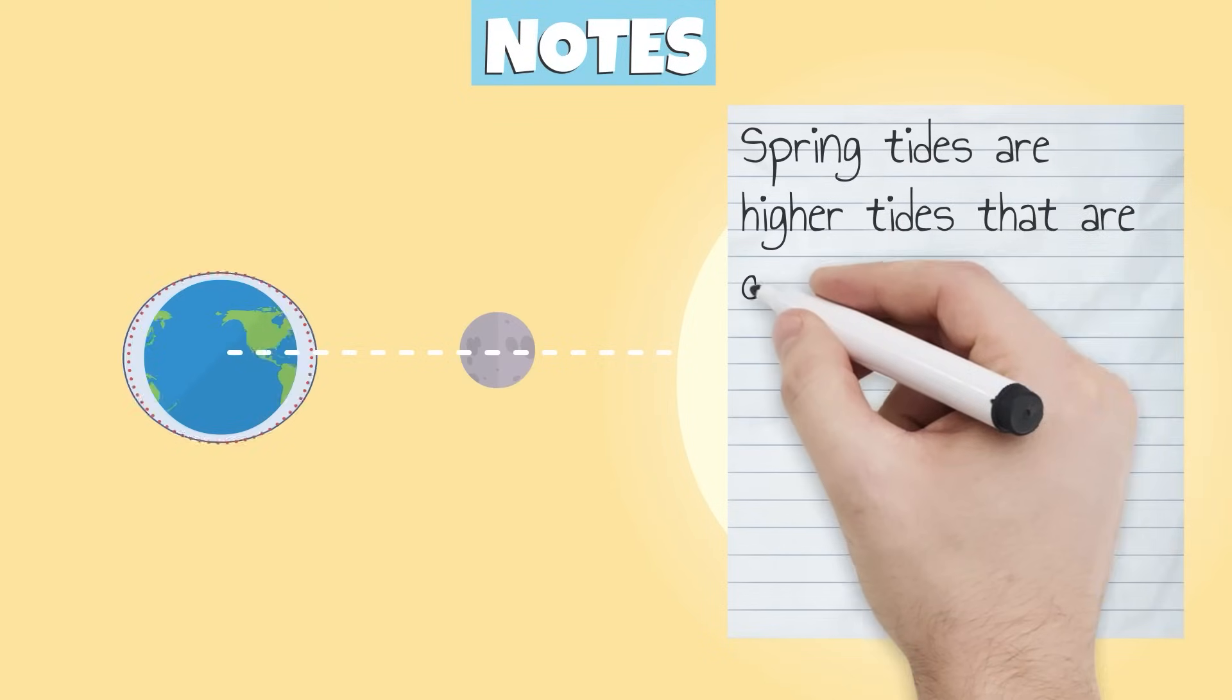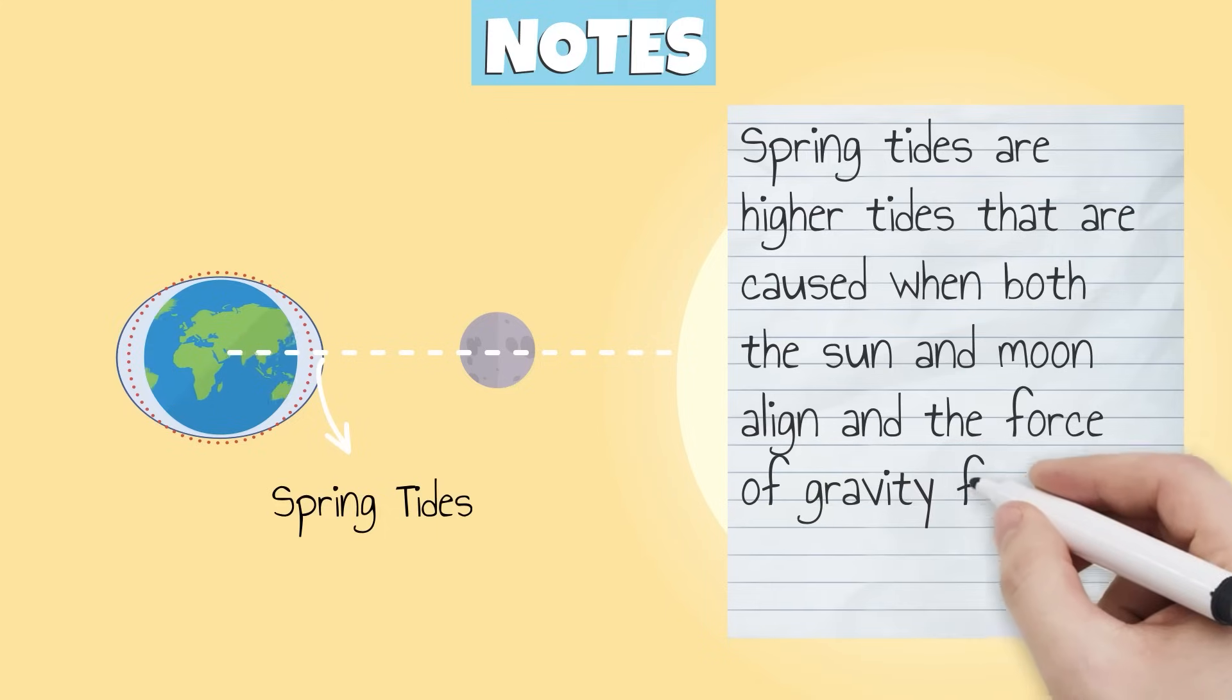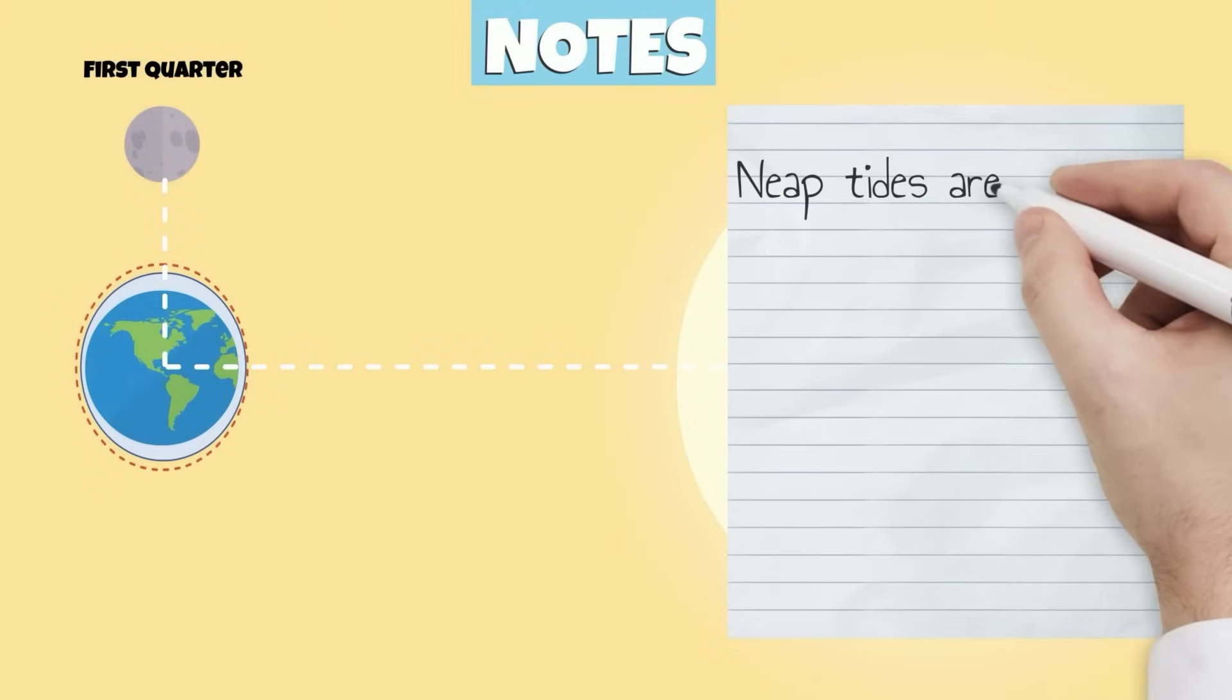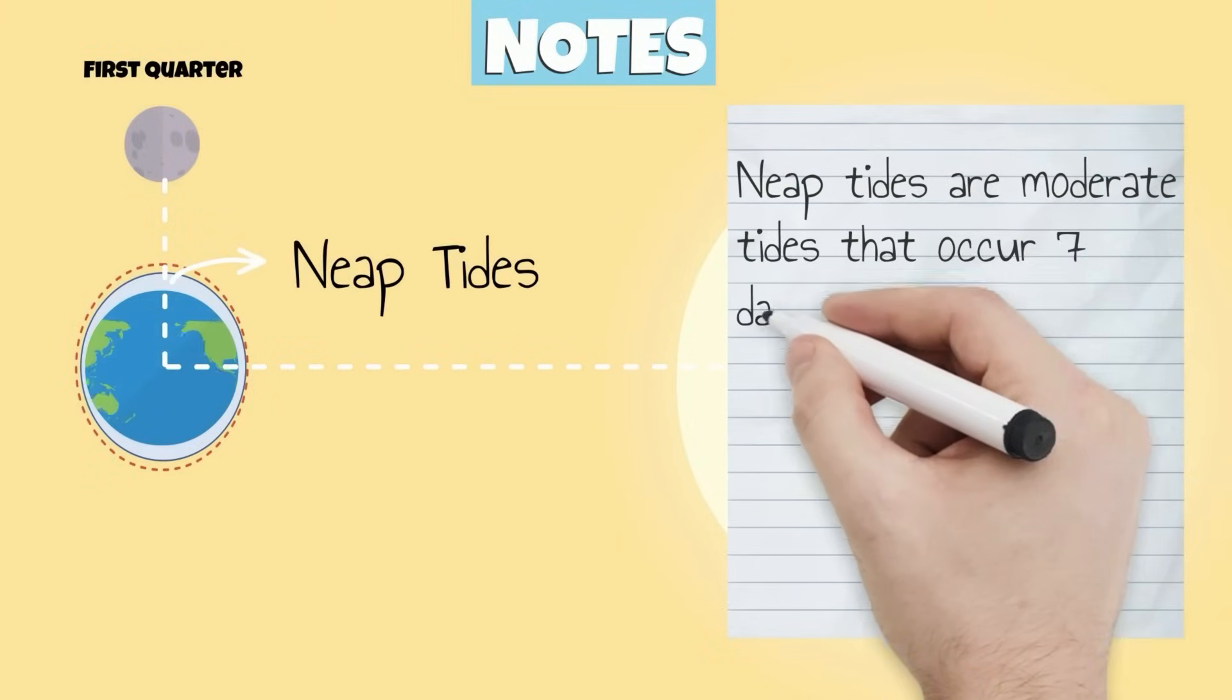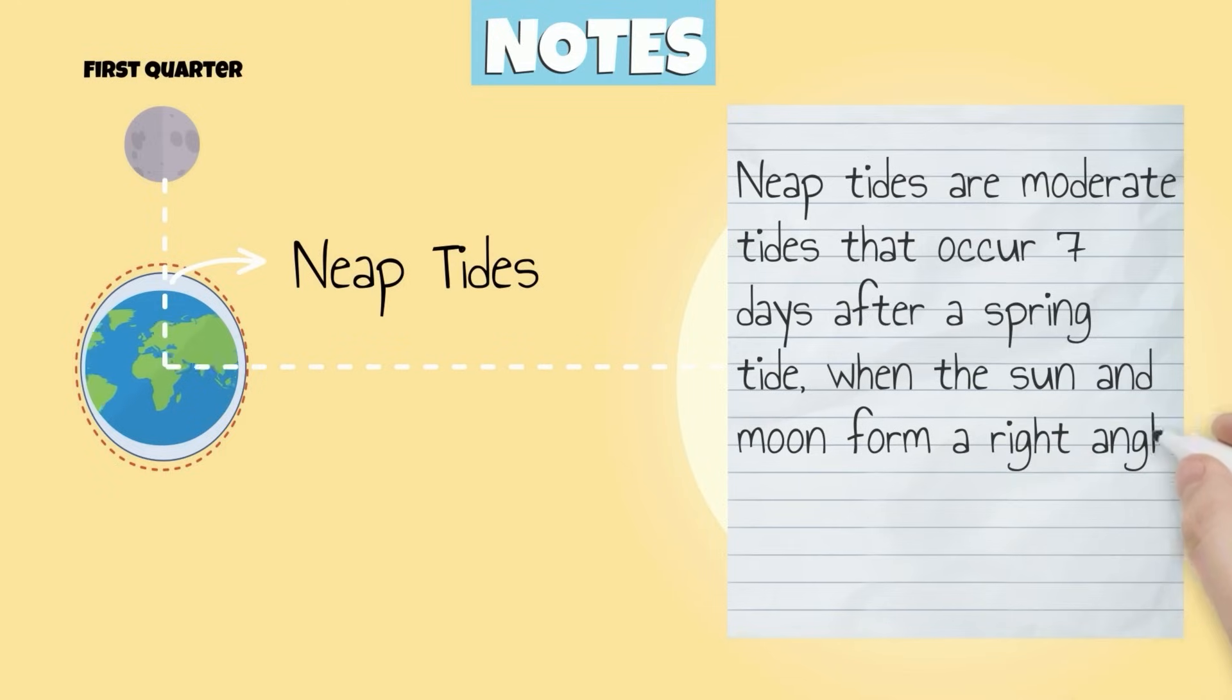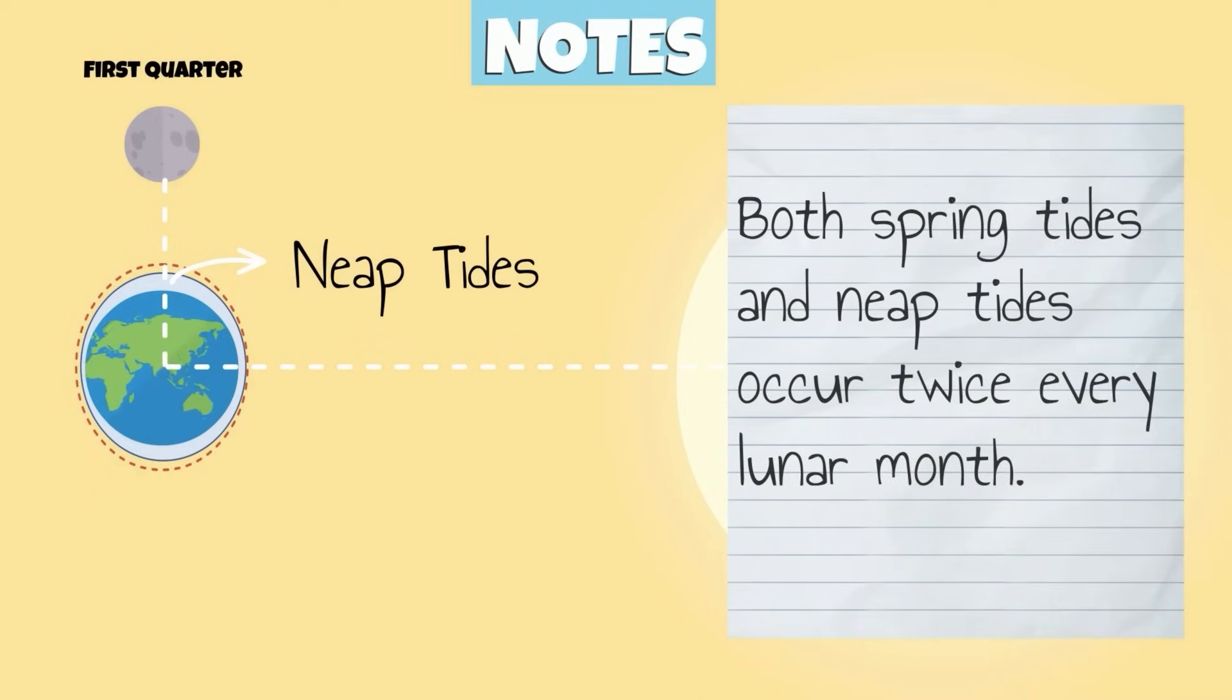Spring tides are higher tides that are caused when both the sun and moon align in the force of gravity from both pulls on the Earth. Neap tides are moderate tides that occur seven days after a spring tide when the sun and moon form a right angle to each other. Both spring tides and neap tides occur twice every lunar month.